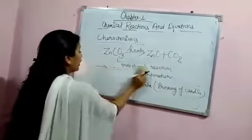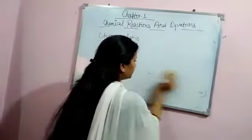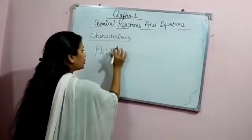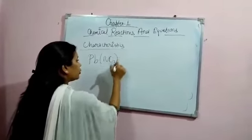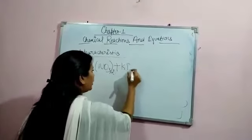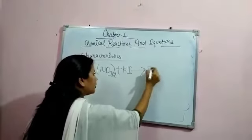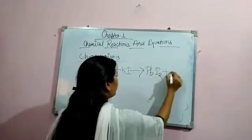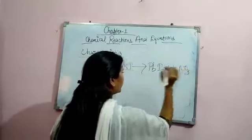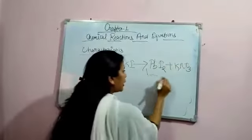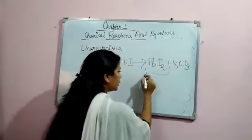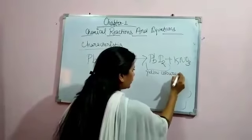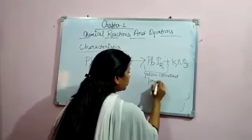Now, let us take another example. When lead nitrate, Pb(NO3)2 reacts with potassium iodide, lead iodide is formed along with potassium nitrate. This lead iodide is yellow colored precipitate. Now, the question arises, what is a precipitate?